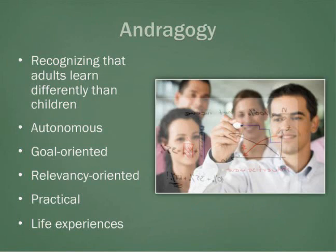Malcolm Knowles coined the term andragogy to refer to adult learners, recognizing that adults learn differently than children. His theory stated five principles of adult learners. First, they are autonomous and self-directed as learners. Second, they are most often goal-oriented. Next, adults are relevancy-oriented or problem-centered. Our world is ordered by consistent challenges or problems. Adults are practical and problem-solvers.